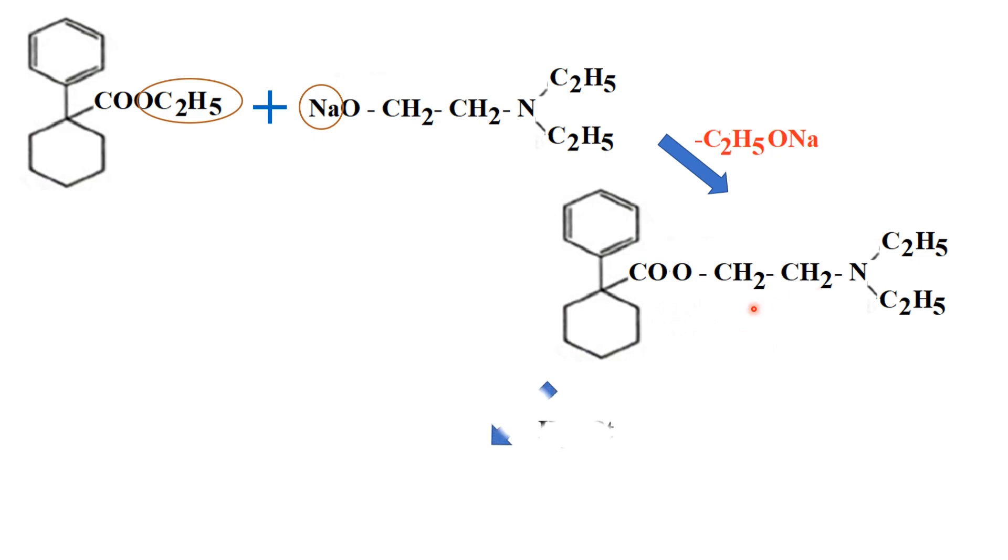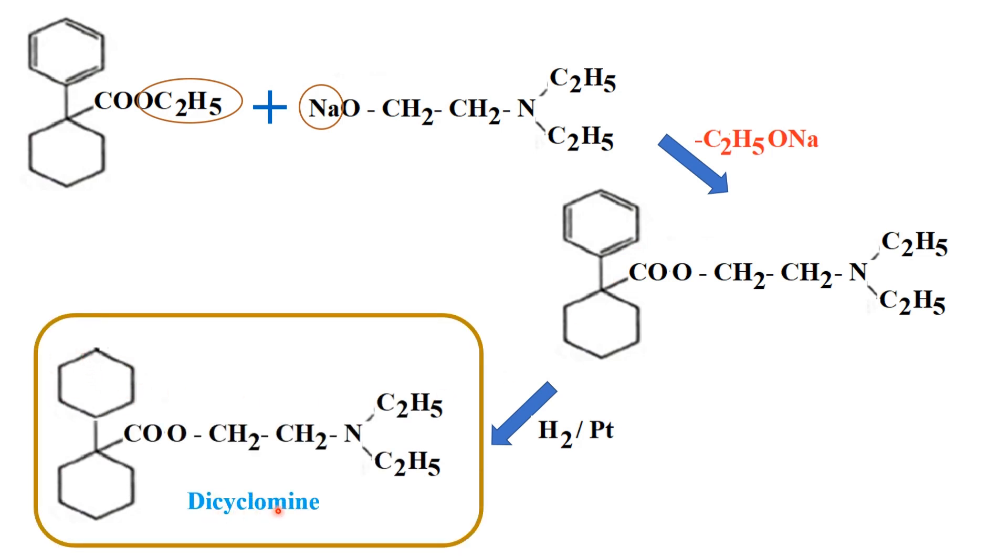Now, this on reduction by means of platinum, here the first ring, the aromatic ring, that is the benzene ring would be reduced and we are getting a cyclohexyl ring and we are getting the product as dicyclamine.